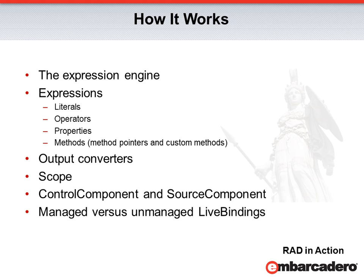Quite often, the control component is known as the output scope — it is the target of the expression engine. The value of the expression created by the expression engine is assigned to a property of the control component. The source component is often visible to the expression engine in the input expression, whose value will be assigned to the property of the control in the output expression. The direction can go from source to control, control to source, or in some conditions, it is bidirectional.